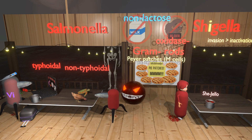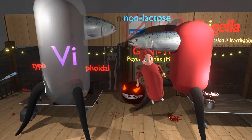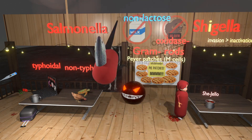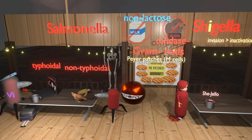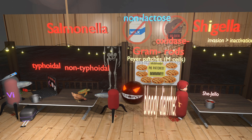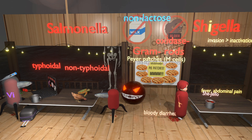You may notice that while Shigella does not have flagella, Salmonella does, because Salmonella is motile while Shigella is not. Additionally, under Shigella there is a puddle of blood, because Shigella causes bloody diarrhea. Acute-onset bloody diarrhea, along with fever and abdominal pain, are characteristic mostly of Shigella, along with E. coli and Campylobacter.